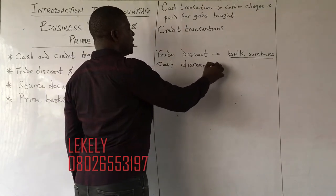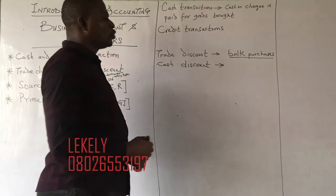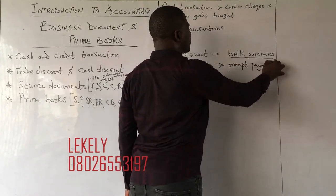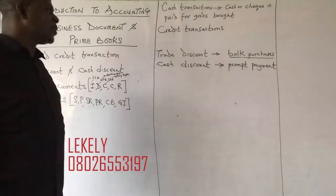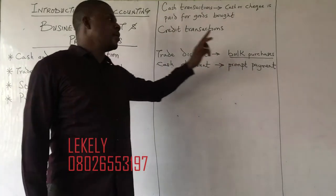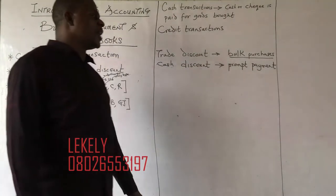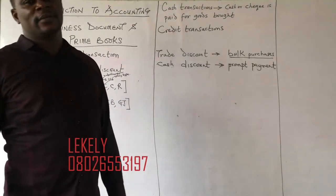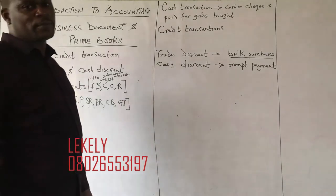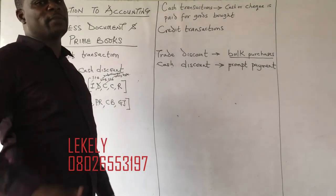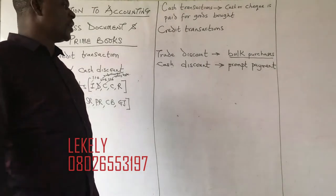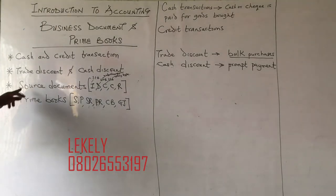Cash discount is the type of discount given by the seller to the buyer for prompt payments — that is the keyword: prompt payment. So the difference between trade discount and cash discount is their keywords. Trade discount is for bulk purchases; cash discount is for prompt payment, meaning you pay instantly when buying something.